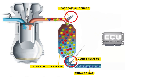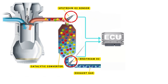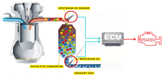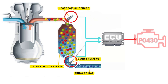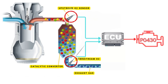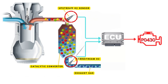The ECU compares the readings from the upstream and downstream oxygen sensors. If the catalytic converter is functioning properly, the downstream sensor should show significantly lower oxygen content compared to the upstream sensor. The P0430 code is triggered when the ECU detects that both upstream and downstream oxygen sensors are showing similar readings.